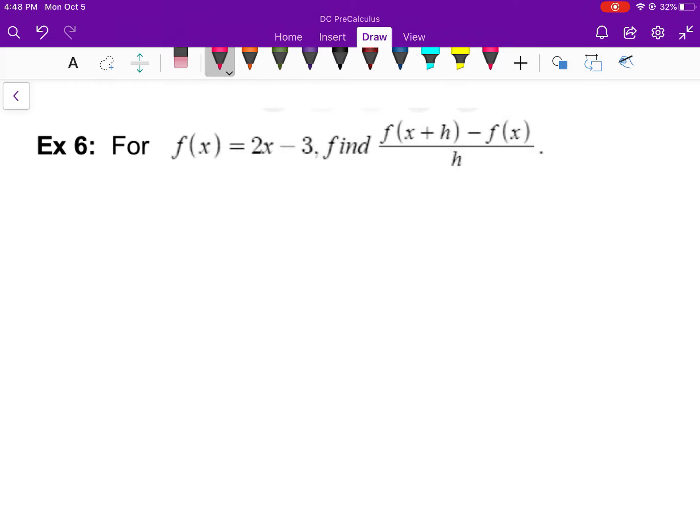I want to find the difference quotient for f of x equals 2x minus 3. So I'm going to color code this for you. I'm going to do f of x plus h in pink, subtract my original function in green, and divide by h in purple. Yesterday in your warm-up, I asked you to find f of x plus h for a particular function. It's the same thing. I'm going to take x plus h and it's going to go in for x right there.